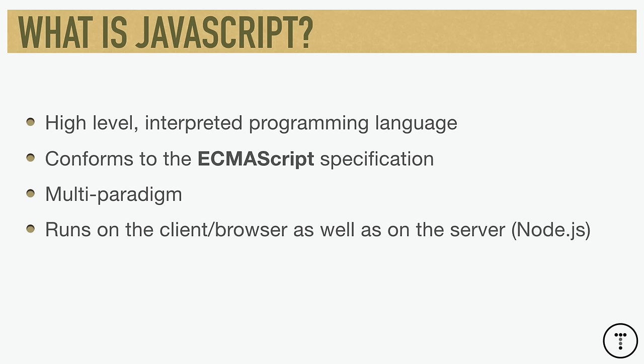JavaScript is also multi-paradigm, which means you can write your code in many different ways — for instance, object-oriented or functional code. JavaScript is also the language of the browser. Your web browser displays HTML markup with CSS styling, but if you want interactive aspects on your page like form validation or alerts, JavaScript is used for that. It's the language of the front end, but you can also run JavaScript on the server using a JavaScript runtime called Node.js.